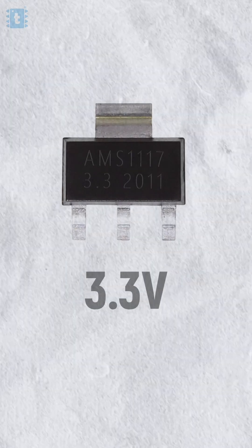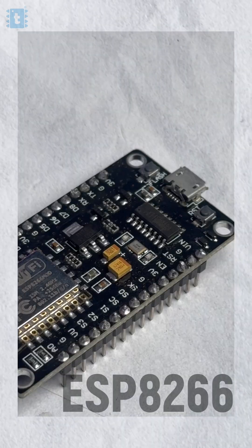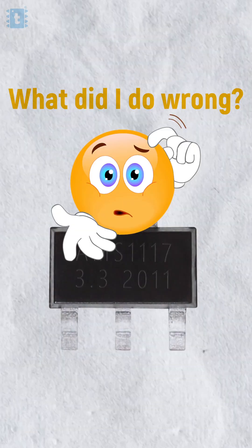So this 117 IC is the most popular 3.3 volt regulator IC and we've seen it everywhere, like the ESP32 dev board, the NodeMCU board. Then why am I saying it's not good?